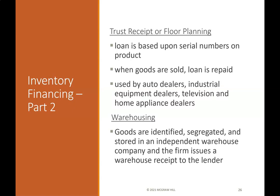Trust receipt or floor planning: The loan is based upon serial numbers on the product; when goods are sold, the loan is repaid. This is used by auto dealers, industrial equipment dealers, and television and home appliance dealers. Warehousing: goods are identified, segregated, and stored in an independent warehouse company, and the firm issues a warehouse receipt to the lender.